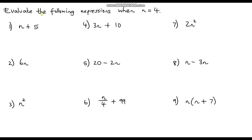It's over to you now. Evaluate the following expressions when n is equal to 4 — you've got 9 different expressions to evaluate. Pause the video and see if you can answer these questions yourself first. Let's go through these together now. Question 1: n plus 5. All we're doing is substituting the letter n with the number 4. So instead of n plus 5, it's going to be 4 plus 5, which gives us 9.